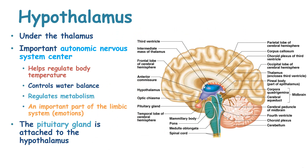The hypothalamus sits under the thalamus and is one of the important autonomic nervous system centers, which helps regulate body temperature, control water balance, regulate metabolism, and is also part of the limbic system which controls emotions. The pituitary gland is attached to the hypothalamus.